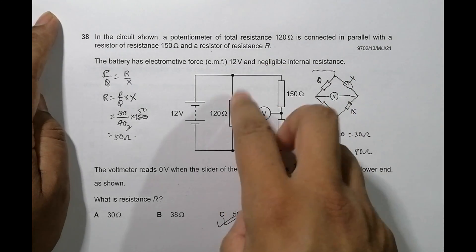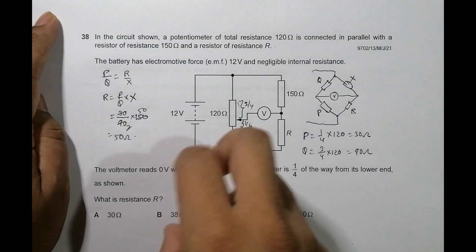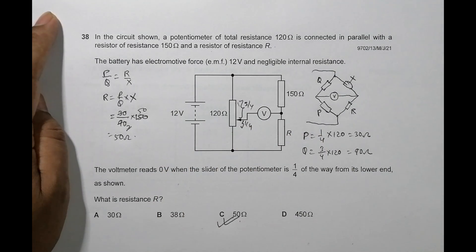So whenever there is balance condition, the first thing that should come into our mind is it could be Wheatstone bridge. So we applied here and got the answer as well.